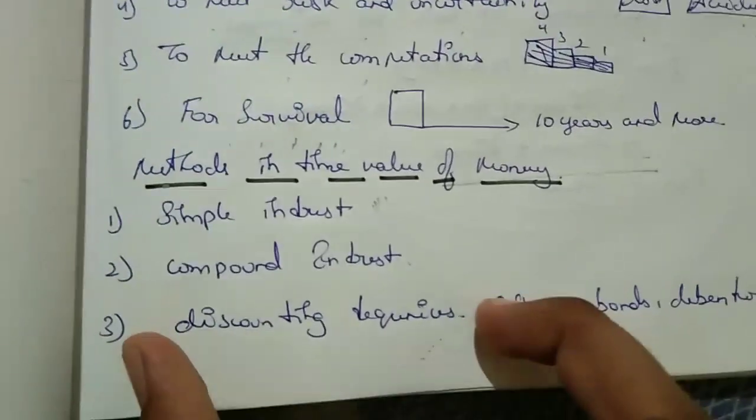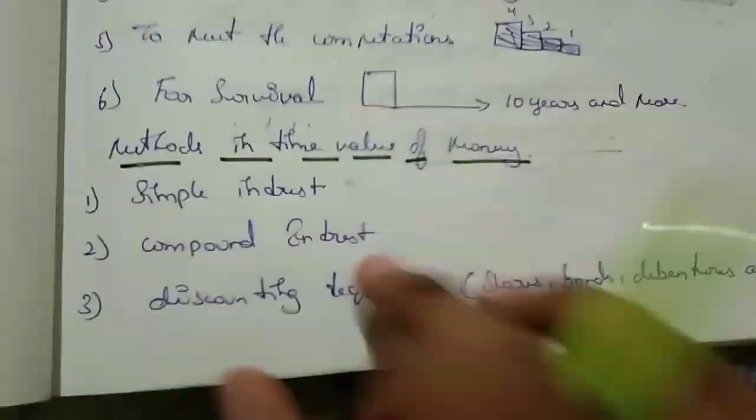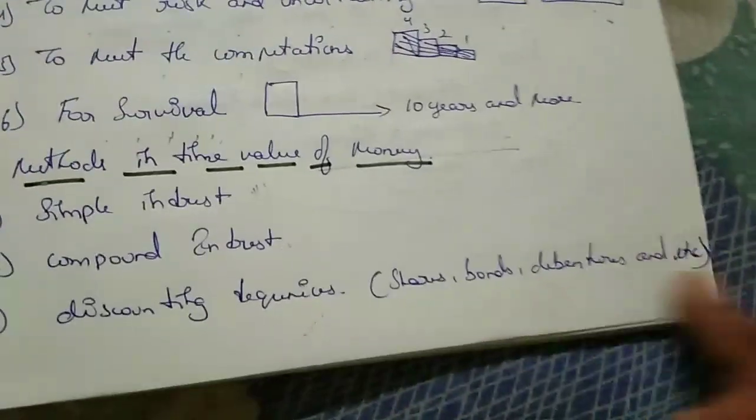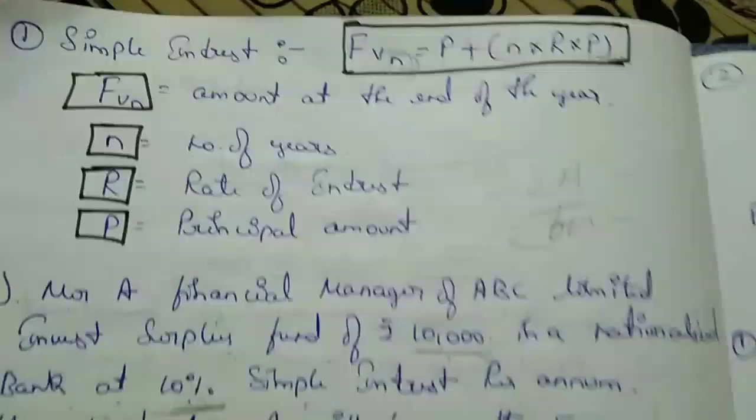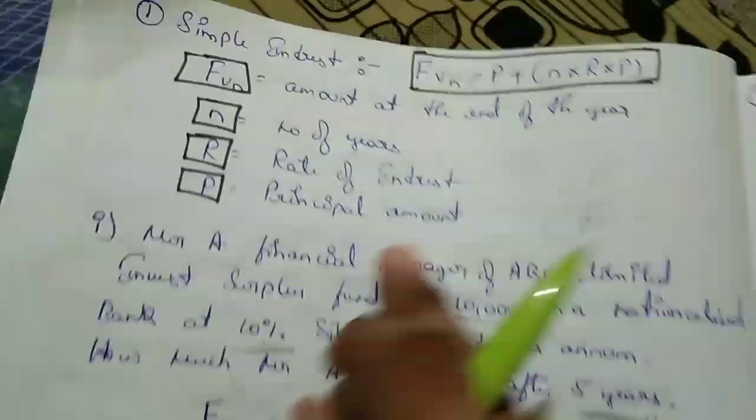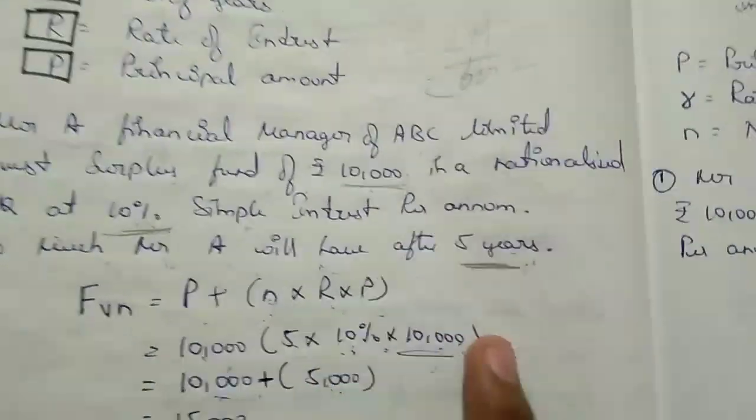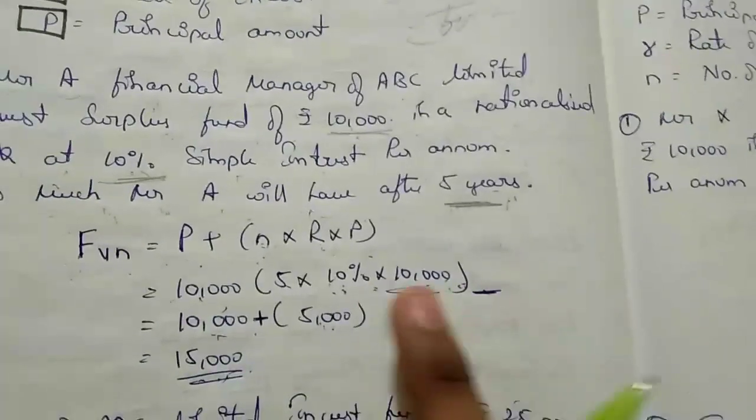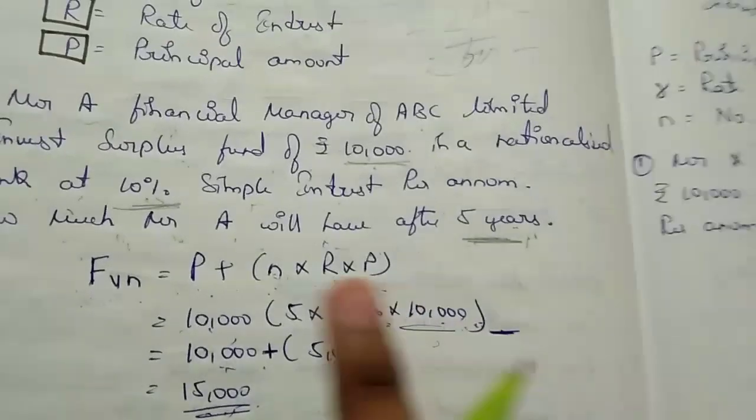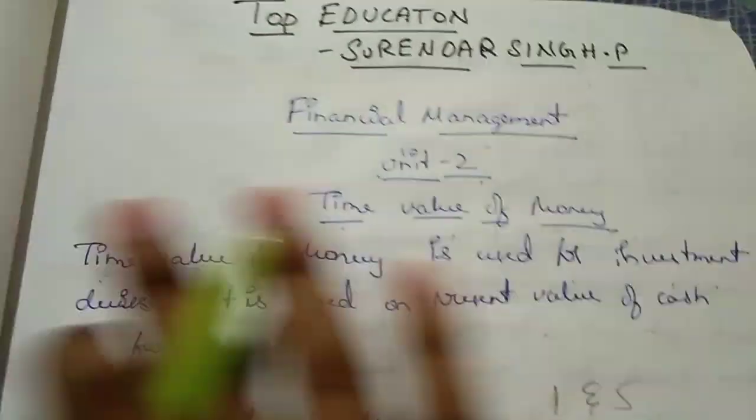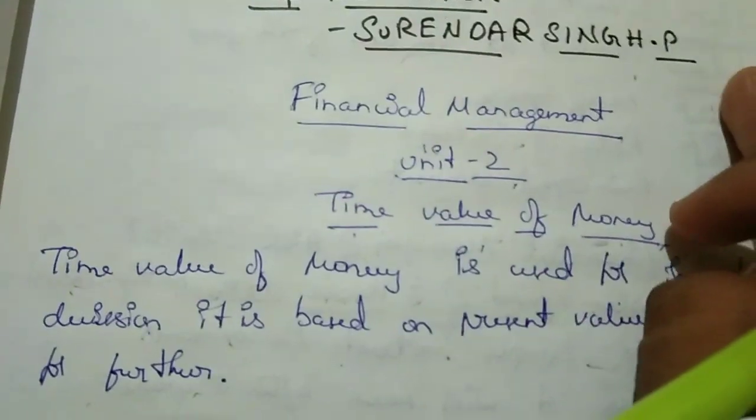Methods in time value of money - we have simple interest, and simple interest we have covered. Next we'll cover compound interest in another video. We'll conclude discounting techniques - we have more in this, like debentures, bonds, and all. This way the methods. Here you have the simple interest formula. Don't forget the formula. I think you write down now only the formula and see the questions, how we are doing from right side, we are multiplying. Thank you for watching this video. If you liked it, please subscribe our channel Top Education and don't forget to share this video to your best friends. Thank you for watching this video. This video was presented by Surinder Singh P. Thank you.